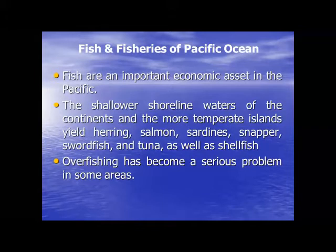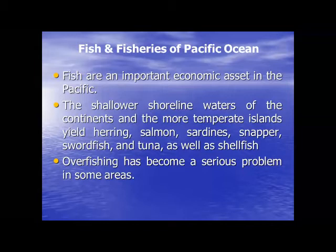When we talk about fish species of Pacific Ocean, so many fish are present like herring, salmon, sardines, snapper, swordfish, tuna, and so many shellfish. But a major problem in Pacific Ocean is that most of the stock is over-exploited. Overfishing is a serious problem in Pacific Ocean.